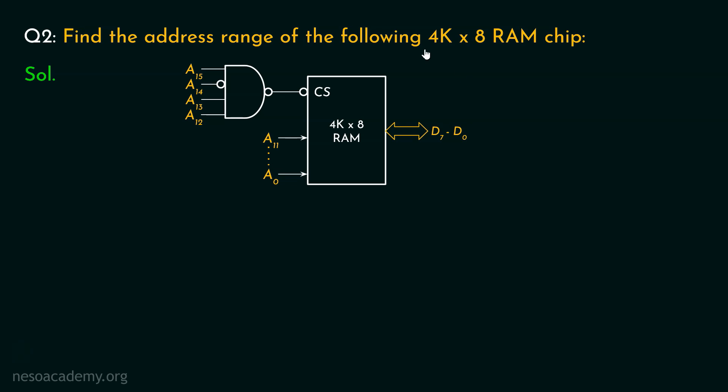Now, since it is 4K by 8, that is, it is supposed to have 8 data lines, and since it is 4K, that is 4096, which is 2 raised to the power 12, so clearly, it will have 12 address lines.